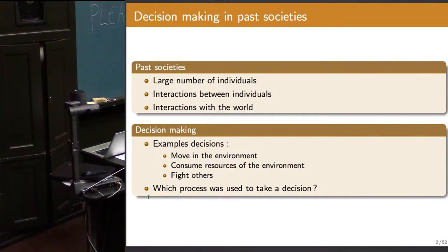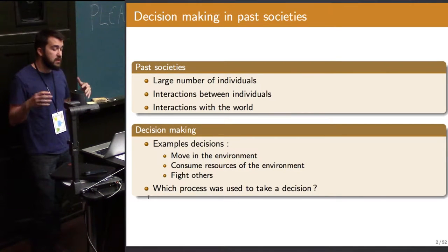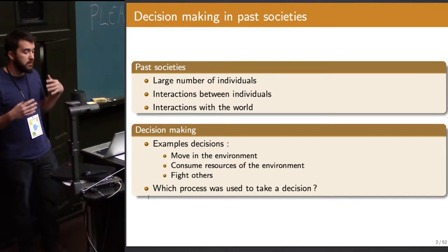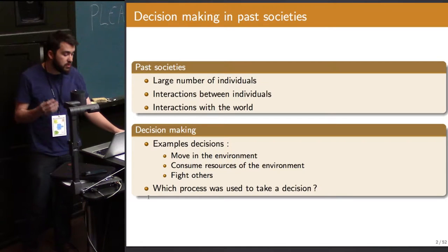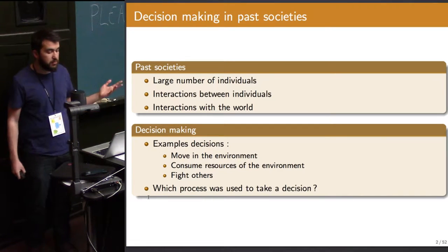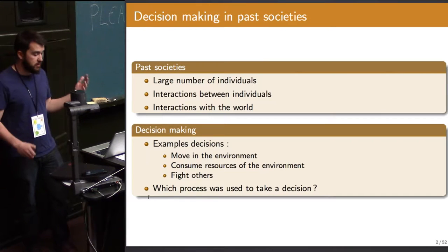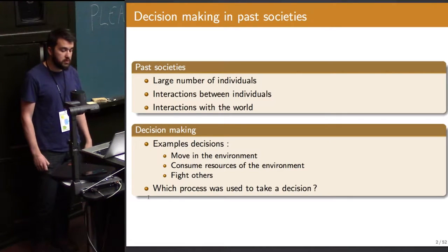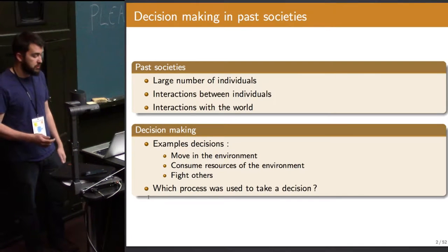In past studies, we have a large number of individuals — like in the previous test case presented — who are taking decisions and interacting between themselves and with the world. These decisions can be of different types: moving in the environment, consuming resources, fighting with others, etc. We are trying to understand which process was used to make these decisions.